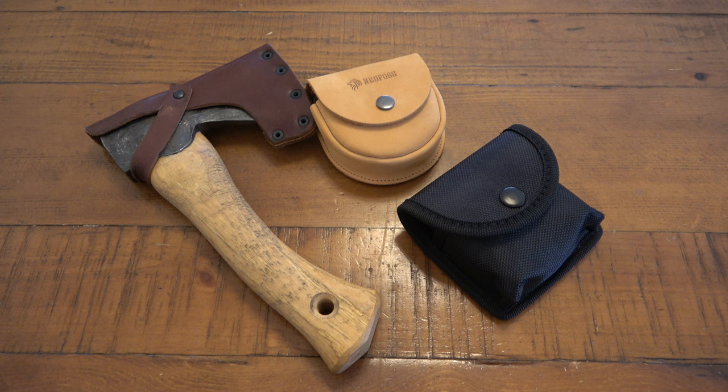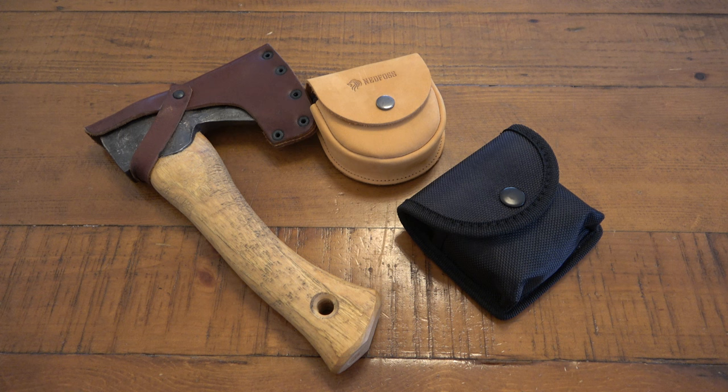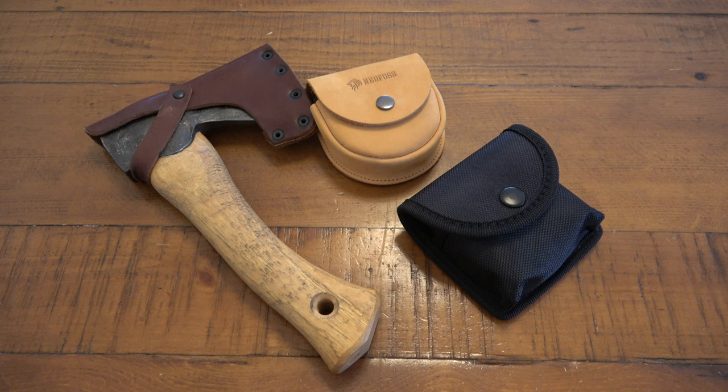They were going through a family member's toolbox and found a sharpener. They asked why it was round and wanted to understand what it was. I told them that's a puck sharpener and puck style sharpeners are used very often for axes, hatchets, and things of that nature. I told them I'd make a video on it, and now I'm making a video on it.